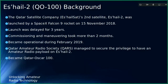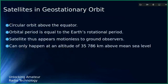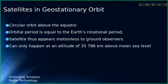The German amateur radio league managed to secure the privilege to have an amateur radio payload on this satellite. It's a circular — not elliptical — orbit, with an orbital period equal to Earth's rotation, so it's geostationary and appears motionless from Earth's point of view. It's at an altitude of about 35,000 kilometers above Earth, which is quite a long distance.